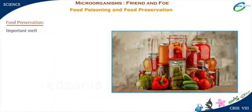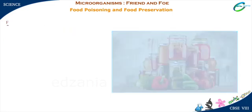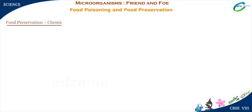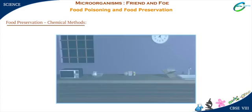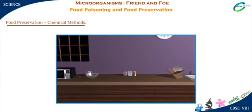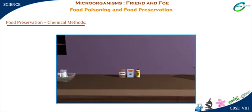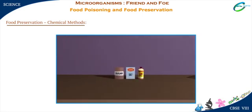Some important methods of food preservation are chemical methods and heat and cold treatments. Chemical methods: Some common chemicals such as edible oil, salt, and sugars are used to prevent the growth of organisms in food items.